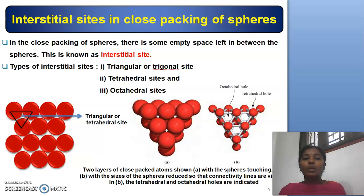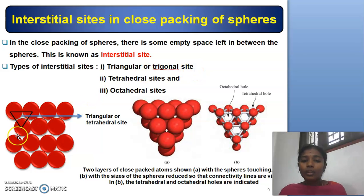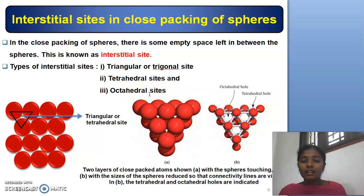Interstitial Sites in Close Packing of Spheres: In the close packing of spheres, there is some empty space left in between the spheres, and this is known as an interstitial site. Types of interstitial sites: Triangular or Trigonal Site — the gap or space in between three equilateral spheres is known as a Triangular or Trigonal Site. Tetrahedral Sites — the space between four equal spheres. Octahedral Sites — these occur when six spheres are in contact with each other.